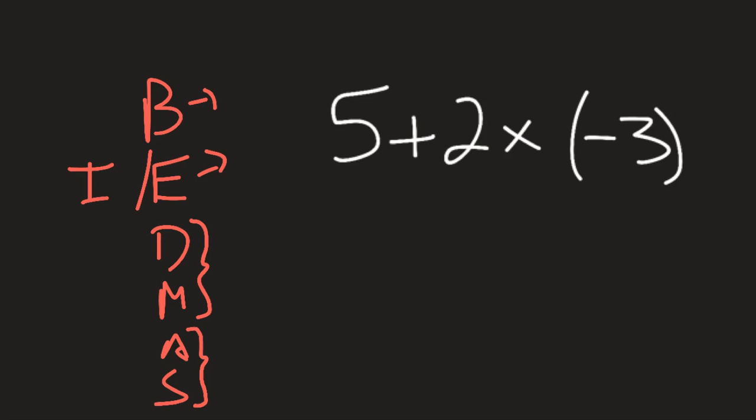So let's look at this question and kind of sort out the different parts that we should be doing in a different order. So we have 5 plus 2 times negative 3. The first thing I see is multiplication right here. So that means we're going to do multiplication first, and we'll do addition second.